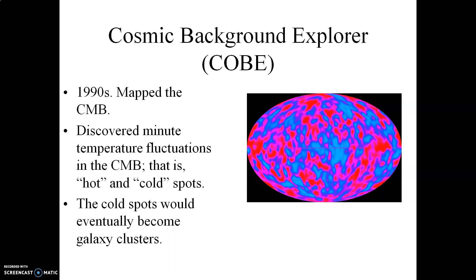Those temperature variations are not all that much — just a few ten-thousandths of a degree Kelvin. Basically, within the cosmic microwave background there are hot spots, indicated here in pink, and there are cold spots, indicated here in blue. The cold spots, however, are cold enough that in the early history of the universe, matter began to clump together and ultimately lead to the formation of galaxies and galaxy clusters.